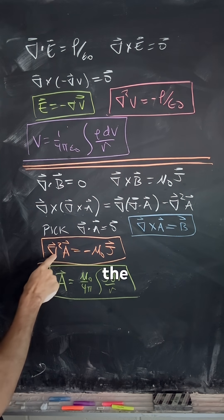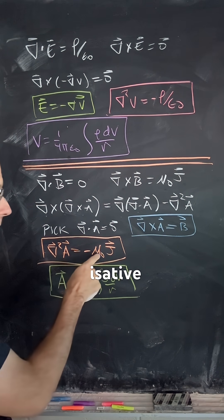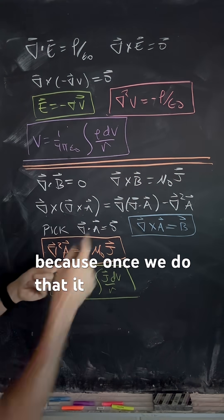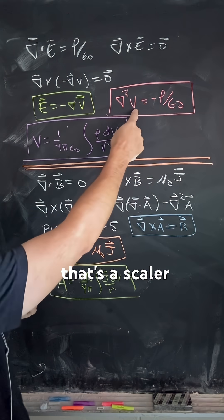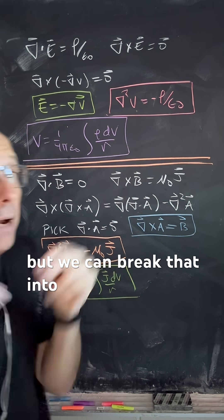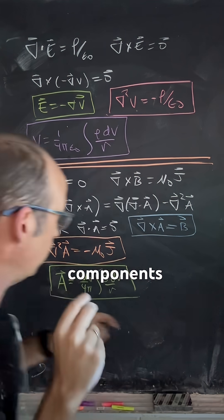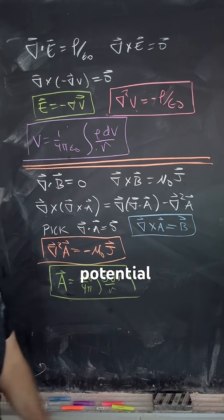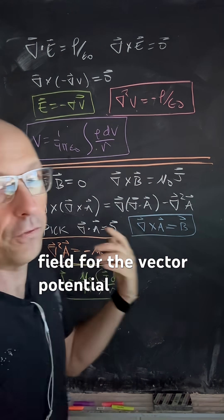We get the Laplacian of A is negative mu-naught J. That's kind of a big deal because once we do that, it looks a lot like this, except that's a scalar and this is a vector. Well, we can break that into Cartesian components, and we get this just like this for the vector potential. And now we can find the magnetic field from the vector potential. So, let's go.